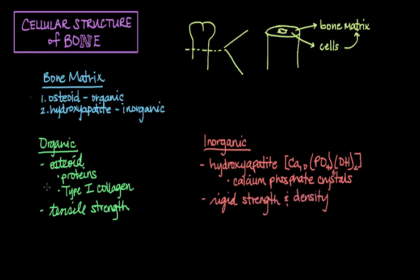So now you have a better understanding of the osteoid or organic portion, and hydroxyapatite, which make up the inorganic portion of the bone matrix. Now let's talk about the cells that are actually responsible for making up this bony matrix.